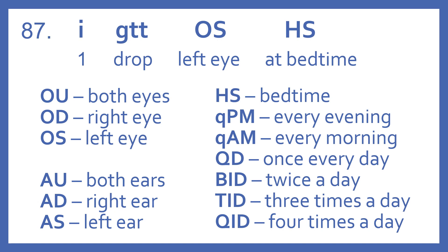OU is both eyes. OD is right eye. OS is left eye. AU means both ears. AD means the right ear. And AS is the left ear. HS is at bedtime. QPM is every evening.